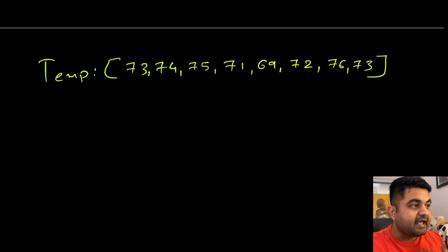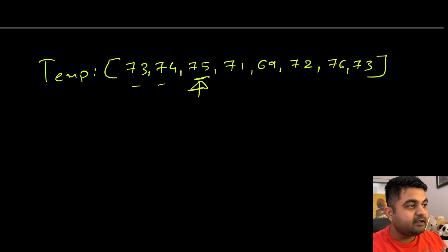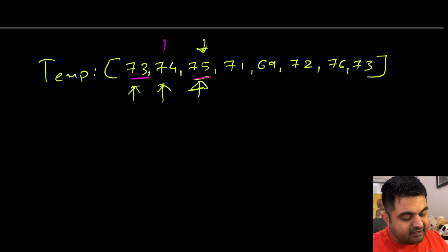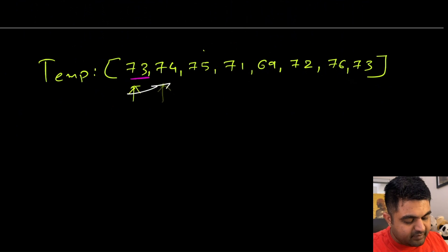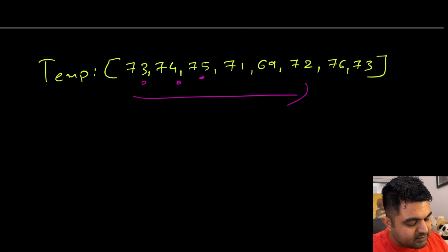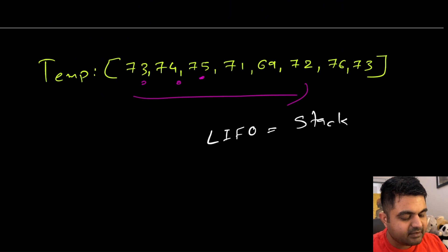We need an extra data structure to store the values of all temperatures for which we have not been able to find the warmer days. Also, for any particular temperature, we need to find the immediate warmer day. For 75, we should not waste time marking 73 as having a warmer day at 75 when 74 is more closely associated with 73. So we have to worry about the immediate previous elements. The best data structure here is one with last-in, first-out properties — a stack.